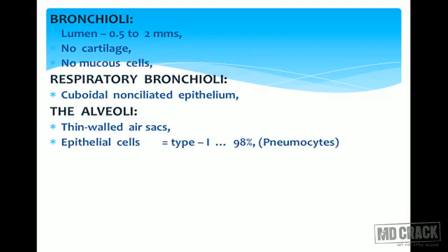Serous cells are the ones which secrete protease inhibitors, lysozyme, and lactoferrin. We have myoepithelial cells to contract these mucous and serous secretions, and we have bronchioles, including the respiratory bronchioles. In the respiratory bronchioles we have cuboidal non-ciliated epithelium. The alveoli are thin-walled air sacs composed of two types of epithelial cells: type 1 pneumocytes and type 2 pneumocytes.